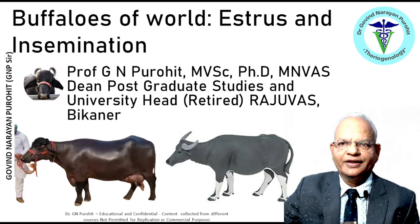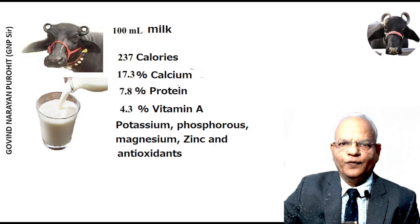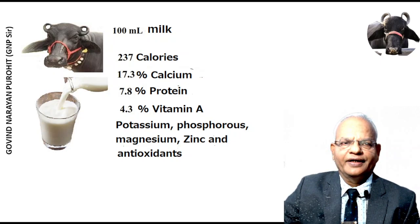In this channel, we are discussing different topics on theriogenology, and in today's topic we discuss about the buffaloes of the world and their estrus and insemination. Buffalo is an animal found in almost all continents of the world. It survives well under harsh climatic conditions, has high disease resistance, and is considered a better converter of feed.